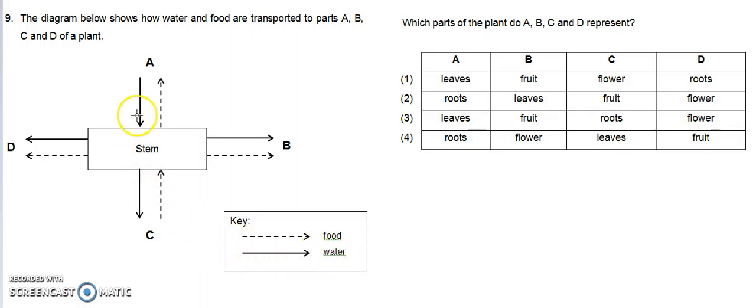If we look at A, this is where water is coming from and given to the stem, which is then given to other parts of the plant. Since this is the start of where the water is coming from, it must be the roots. So A should be the roots.